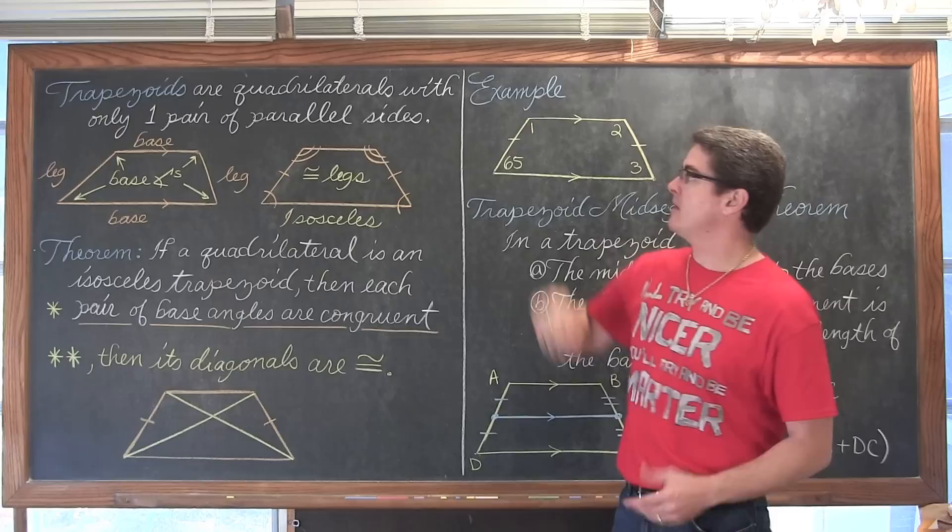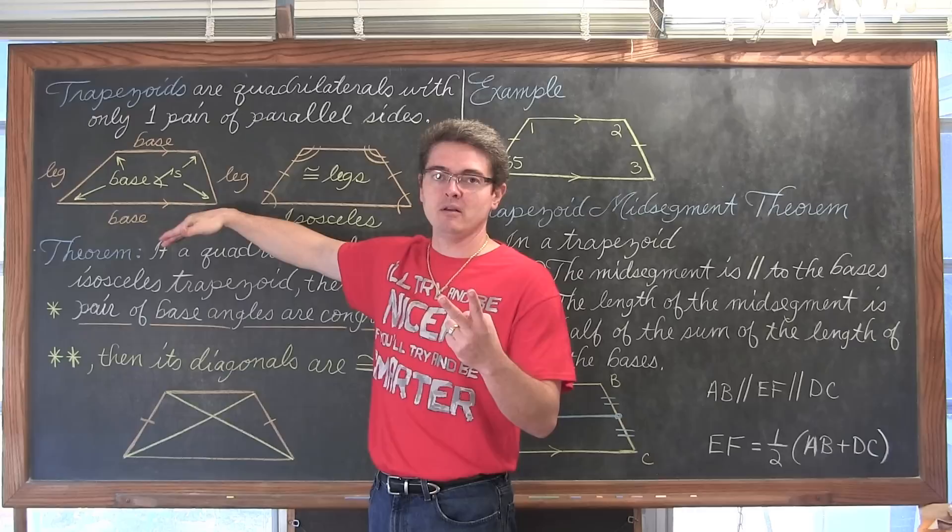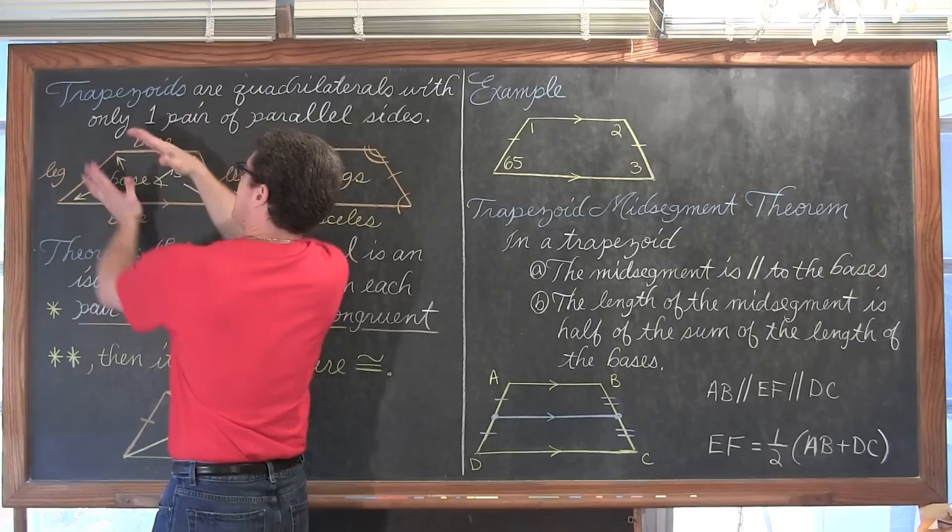Trapezoids are quadrilaterals — a straight-sided figure with four sides. It only has one pair of opposite sides which are parallel. Here we have a general trapezoid. The two sides which are going to be parallel to each other are going to be the bases.